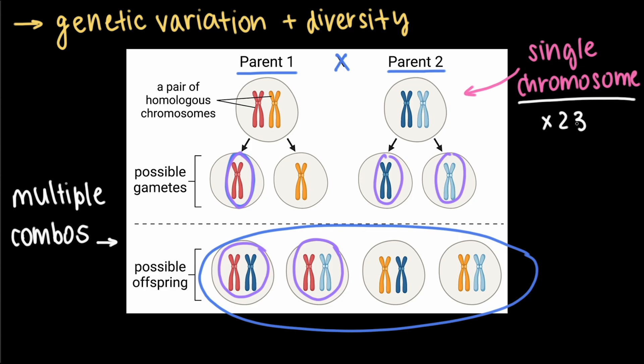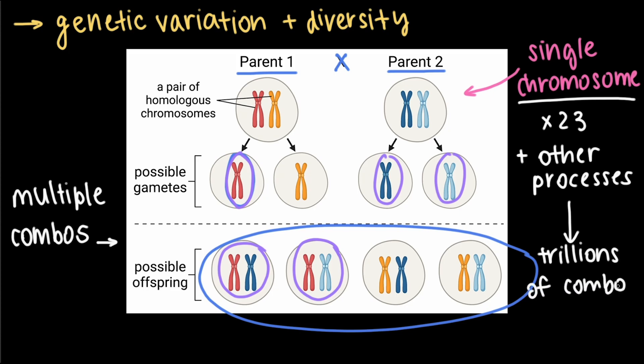This is why siblings can look alike but aren't identical. Even more mind-blowing, there are other genetic processes that occur during fertilization that increase variation even more, resulting in trillions of possible allele combinations for each offspring. This is why no two people — except monozygotic twins — are genetically alike.